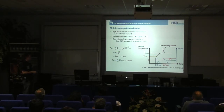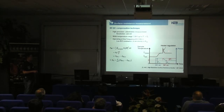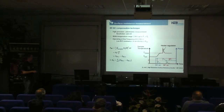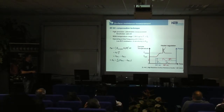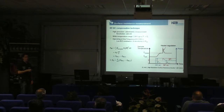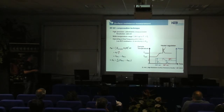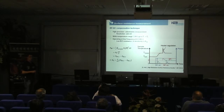It works in the way that we heat up the sample to a temperature of interest with the heater mounted on the bottom side of the sample. When we switch on the RF, the heater is regulated so that the temperature of interest on the sample remains constant — we maintain thermal equilibrium. The difference between these two powers on the DC heater gives the dissipated RF power on the sample. We can convert this via the geometrical factor of the sample, which is known from simulations, directly to the surface resistance.